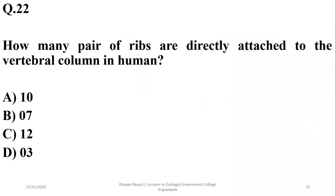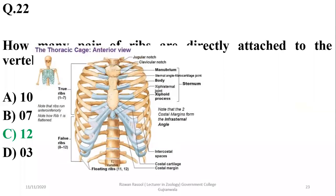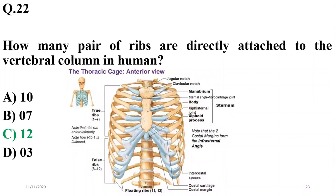Question 22: How many pairs of ribs are directly attached to the vertebral column in humans? There are 12 pairs in total, all directly attached to the vertebral column. Of these, 7 are directly attached to the sternum, 3 are indirectly attached via the costal arch, and 2 are floating ribs not attached at the front. All 12 rib pairs attach to the vertebral column. The right option is C.